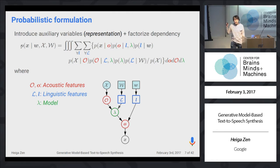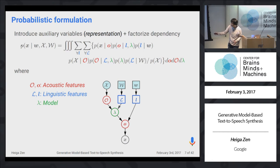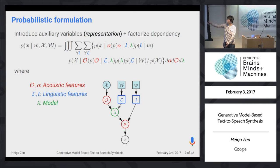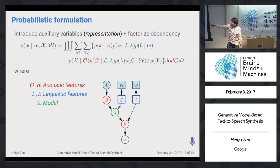Getting that predictive distribution is hard, so we introduce auxiliary variables. The first is the acoustic feature, the second is the linguistic feature, and then the model that runs the mapping between linguistic and acoustic information. We treat these as random variables. By integrating and marginalizing over all possible combinations, this is still equivalent. As a graph, we extract acoustic features from the waveform, linguistic features from the text, model the dependency, extract linguistic features for synthesis, predict acoustic features, then draw a waveform.